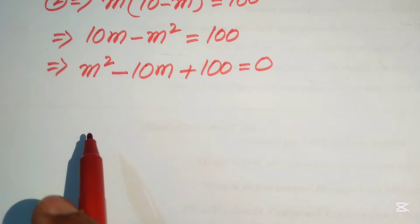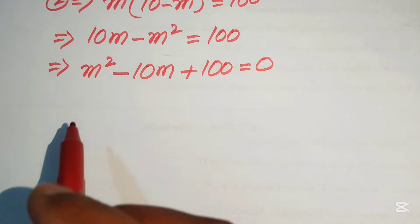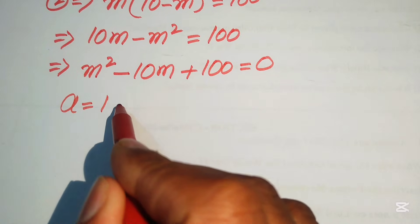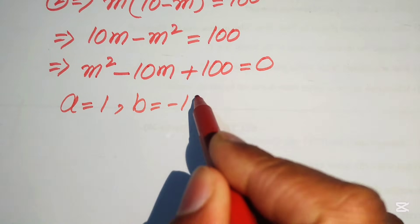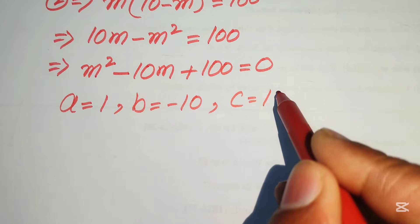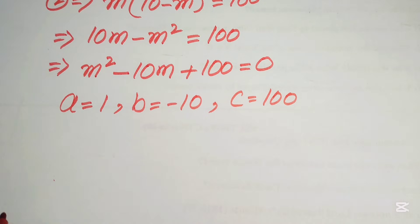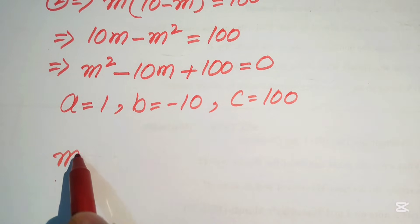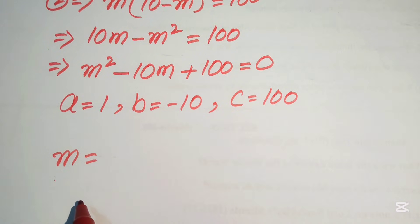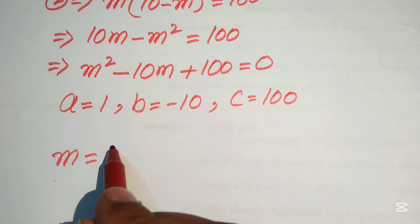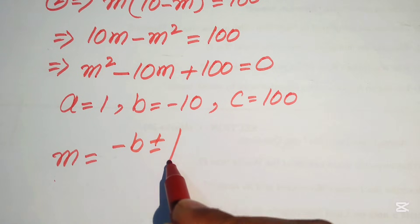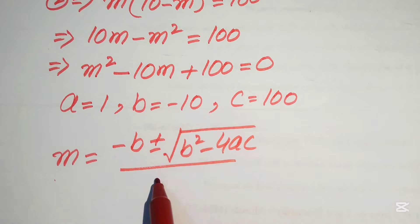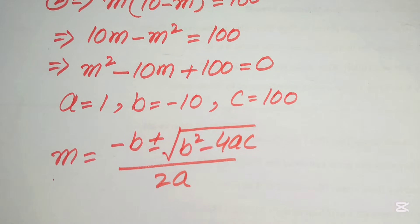We write the coefficients of this equation: a equals 1, b equals minus 10, and c equals 100. We use the quadratic formula to solve: m equals minus b plus or minus the square root of b squared minus 4ac, divided by 2a.